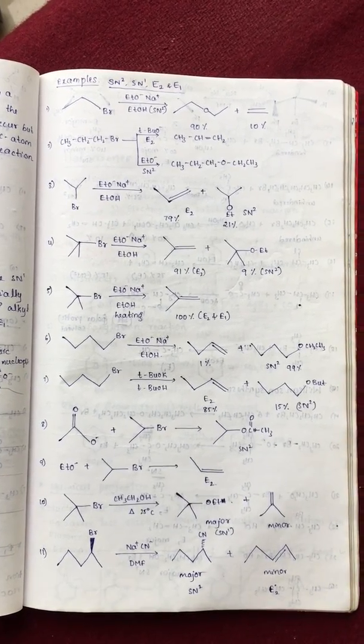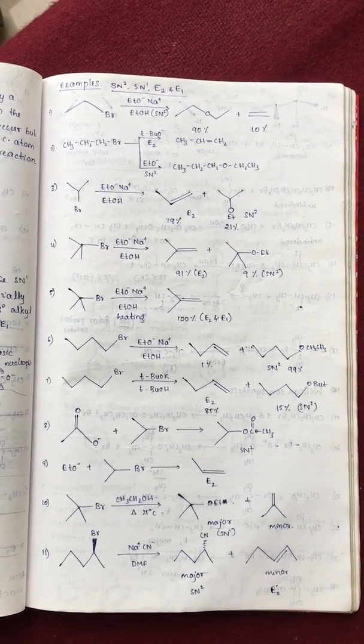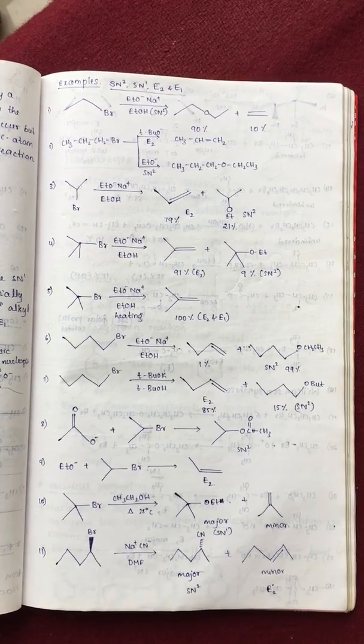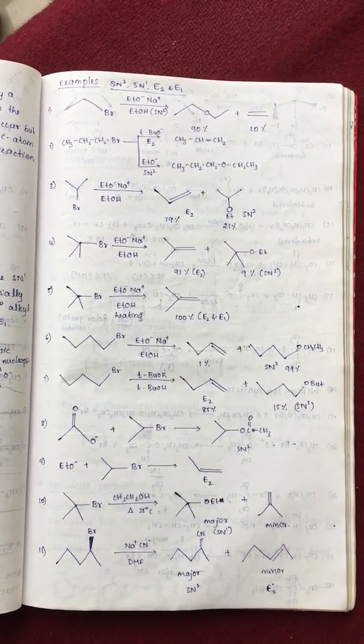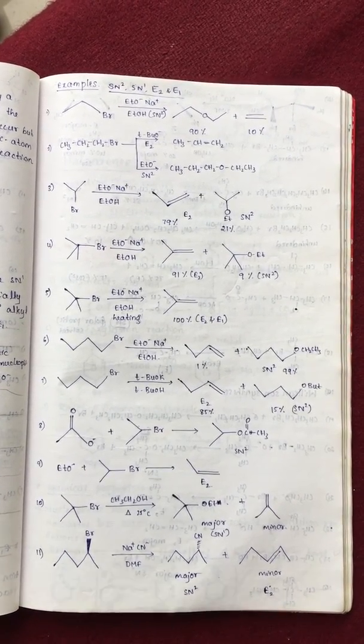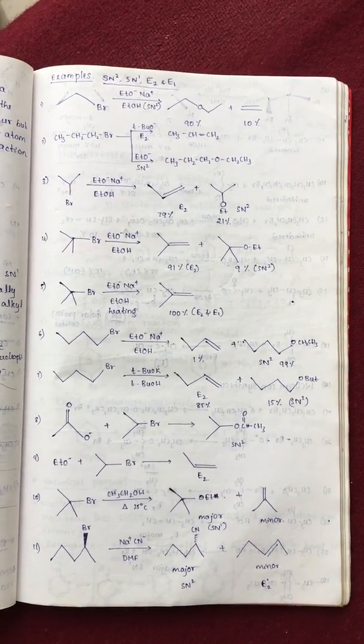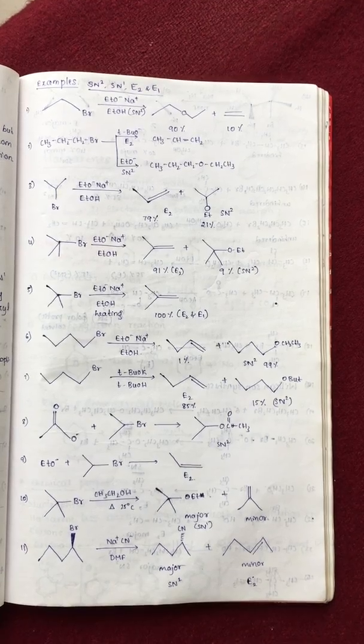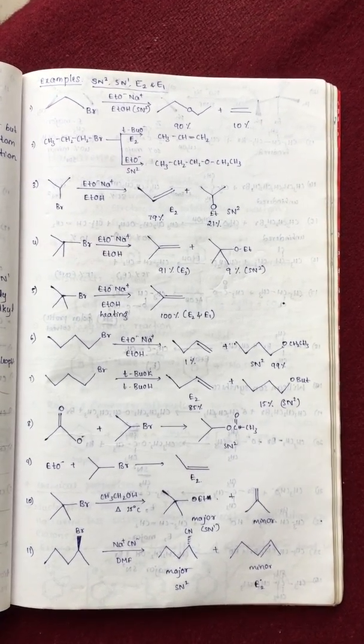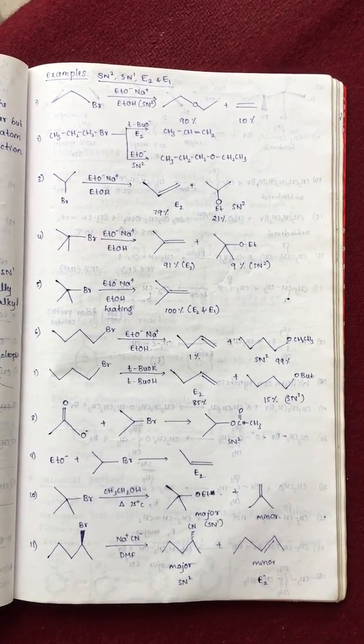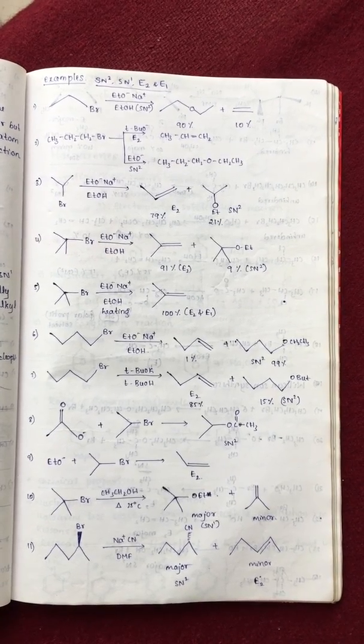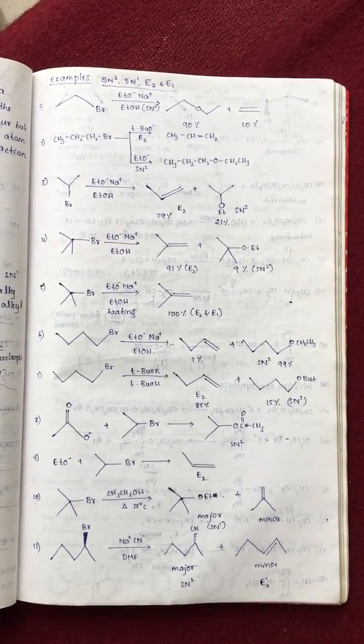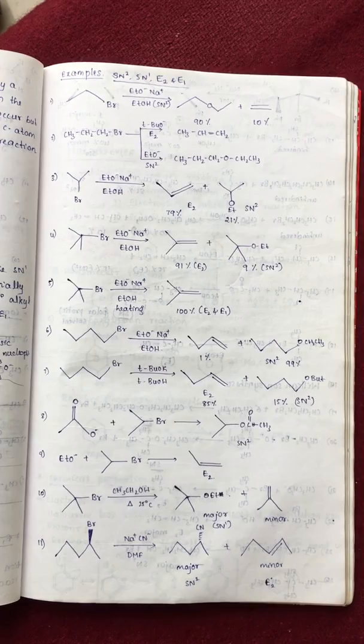Next, tertiary butyl bromide, tenth example, in presence of ethyl alcohol and heat given. So, ethyl alcohol is a weak nucleophile. Temperature mentioned, that is fine. At room temperature only. That is what is substitution product, that is SN1. Why not is SN2? Nucleophile negatively charged is required. Strong nucleophile required for SN2.